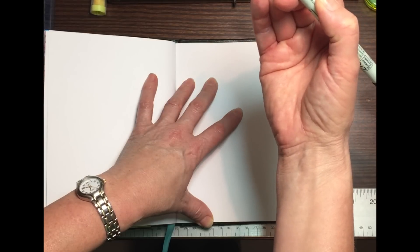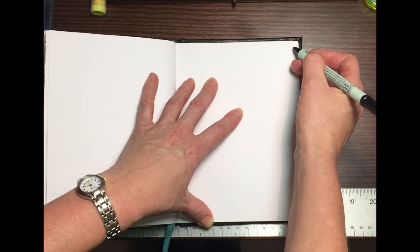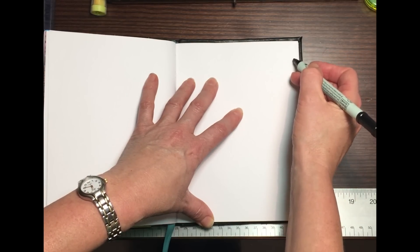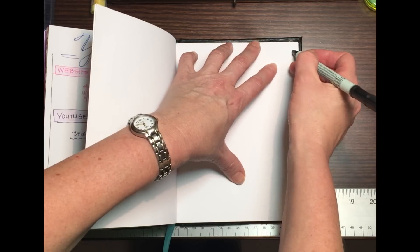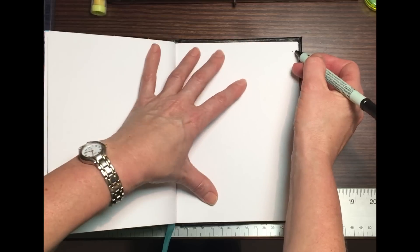So once I decide where it's gonna be, I put my marker down and then I freeze my hand in the position that I want. So for example, I want my line to be about here, which is about a quarter inch from the edge of the paper.